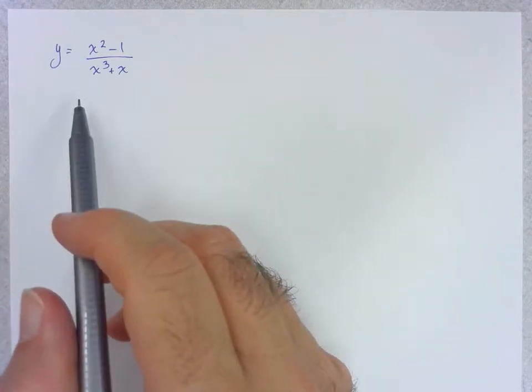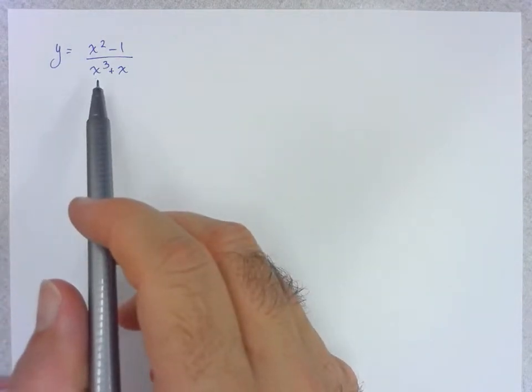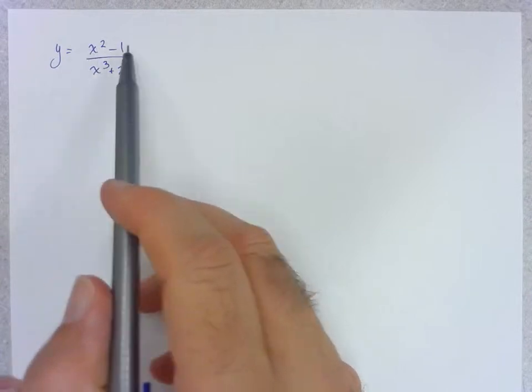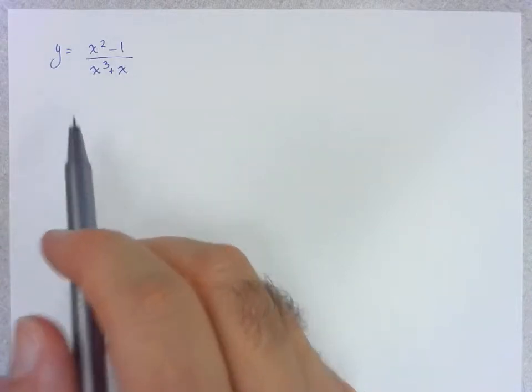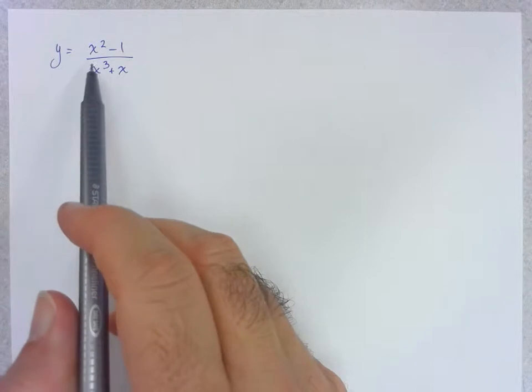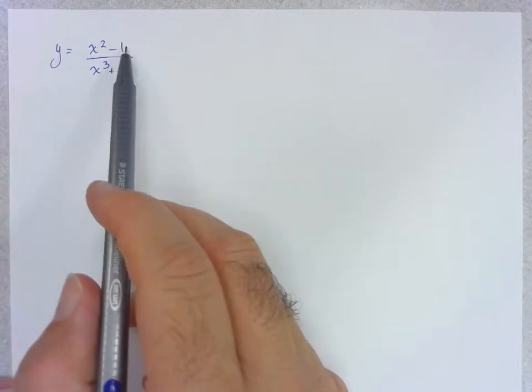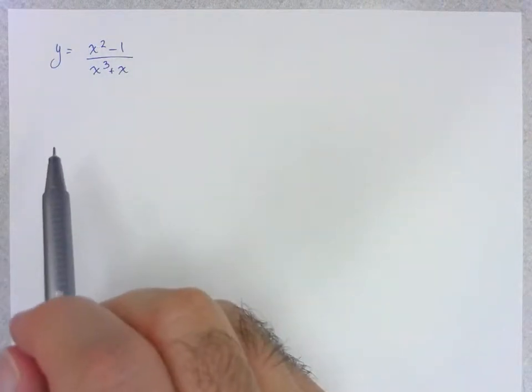In other words, functions whose equations are made up of a quotient of polynomials. A couple things to recognize is that in a rational function the numerator and denominator individually are polynomial functions.